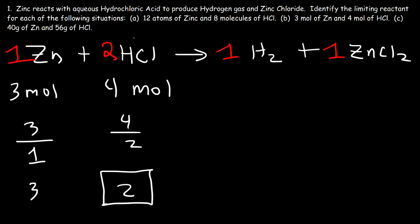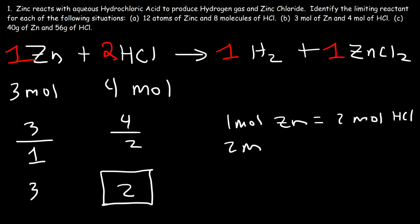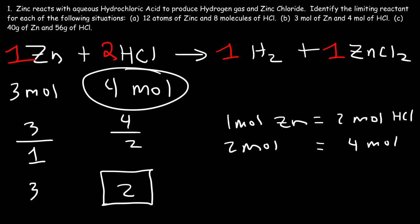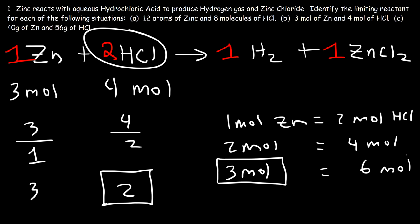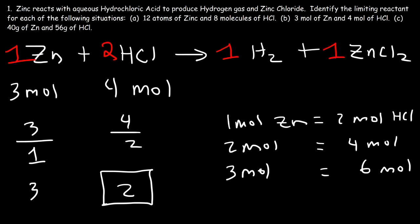The ratio is 1 to 2, so 1 mole of zinc reacts with 2 moles of HCl based on the coefficients. So 2 moles of zinc will react with 4 moles of HCl. Notice that we already have 4 moles of HCl, so 4 moles of HCl can only react with 2 moles of zinc. But we have 3 moles of zinc, which means HCl is going to be gone by that time. 3 moles of zinc would require 6 moles of HCl — we don't have that, so we're deficient in HCl. That's why it's the limiting reactant. The easiest way to determine it is to find which one has the lowest quantity per coefficient ratio.